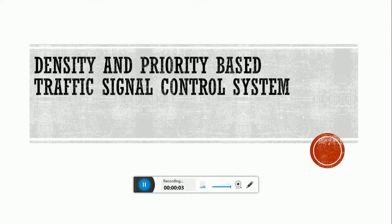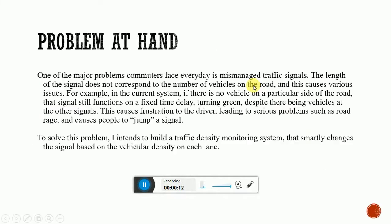Hi, my name is Mayur and the project is Density and Priority Based Traffic Signal Control System. One of the major problems communities face every day is mismatched traffic signals. The length of the signal does not correspond to the number of vehicles on the road, and this causes various issues.